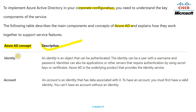The very first concept is Identity. An identity is an object that can be authenticated. The identity can be a user with a username and password. Identities can also be applications or servers that require authentication by using secret keys or certificates — so applications and servers can also be an identity.